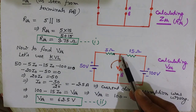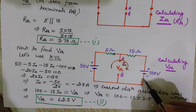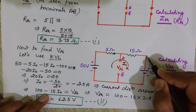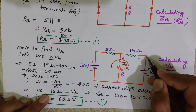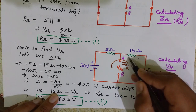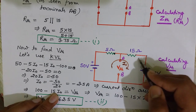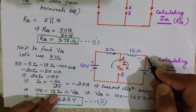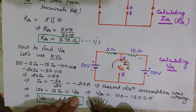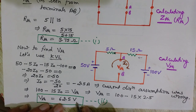Now I can calculate the Thevenin voltage. Taking the reference voltage at the bottom node as 0, the voltage at the 100 volt source terminal is 100 volts. Since the current of 2.5 A flows through the 15 ohm resistor, V Thevenin equals 100 minus 15 times 2.5, which equals 62.5 volts.